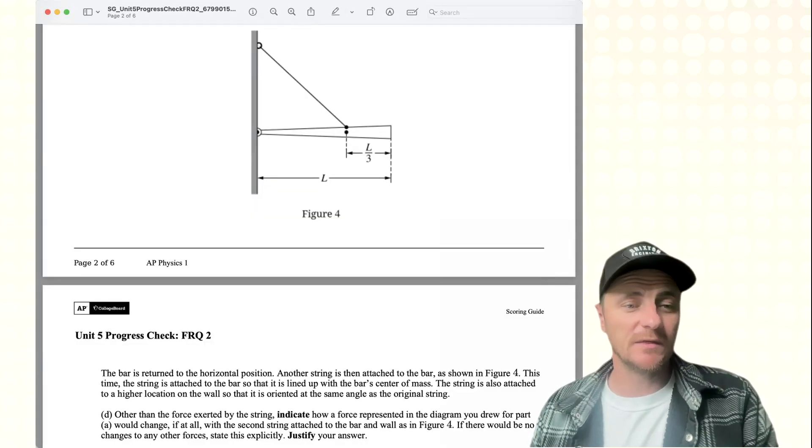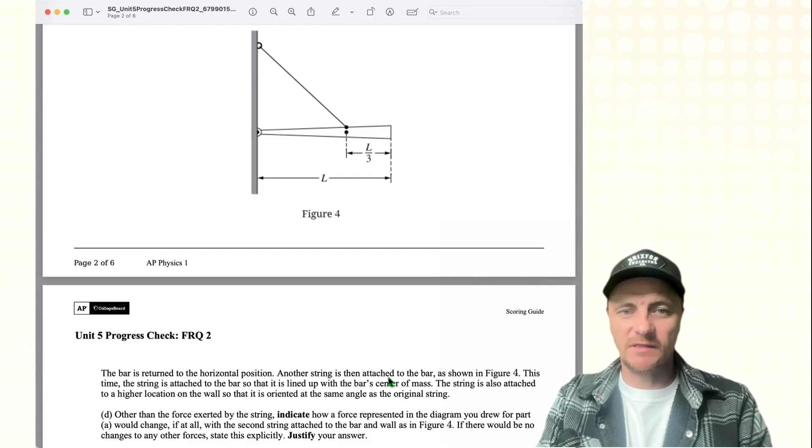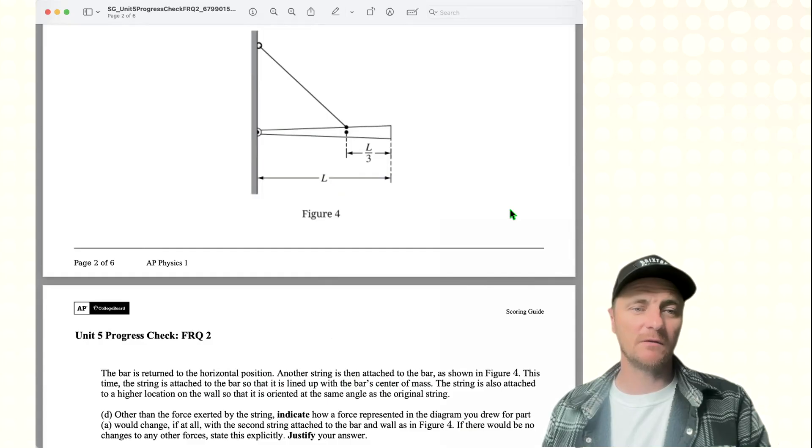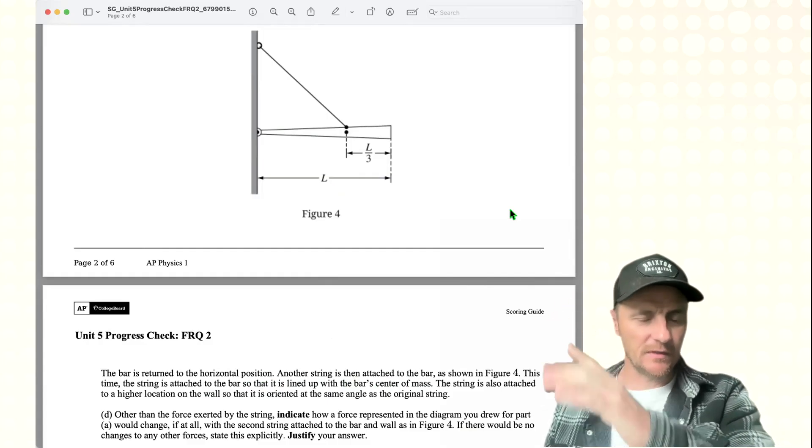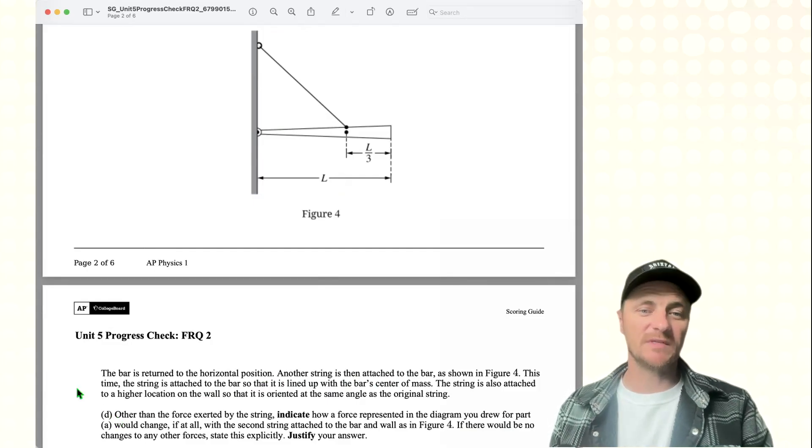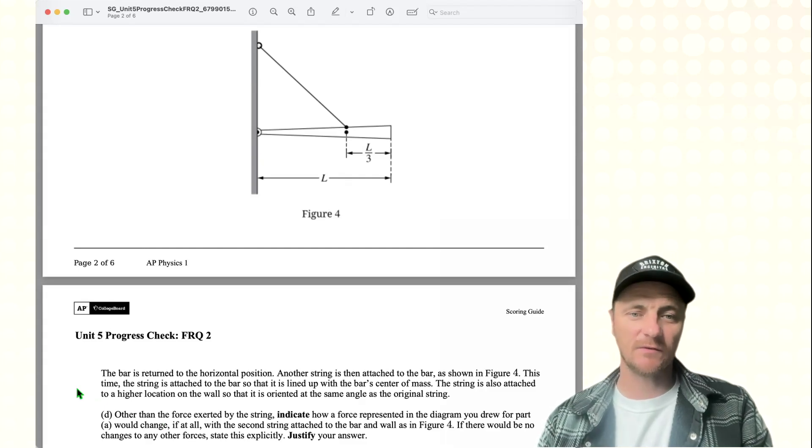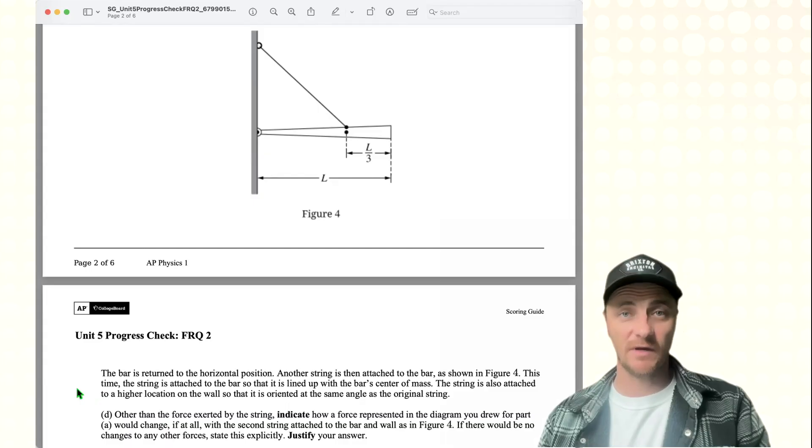All right, last part, part D. We've got this bar that's been returned to its original horizontal position. Another string is then attached to the bar shown in figure four. This time, the string is attached to the bar so that it's lined up with the center of mass. The string is also attached to a higher location on the wall so that it is oriented at the same angle as the original string. D is saying other than the force exerted by the string, indicate how a force represented in the diagram you drew for part A would change, if at all, with the second string attached to the bar and wall as in figure four. If there would be no changes to any other forces, state this explicitly, justify your answer. And there's definitely going to be some changes.